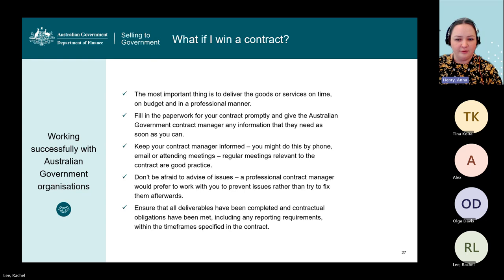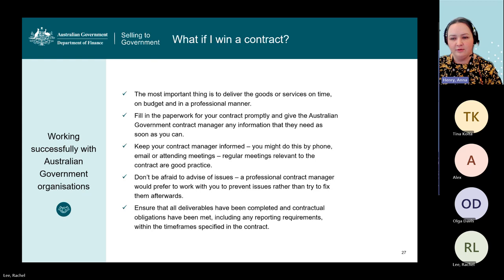To successfully work with the Australian Government, the most important thing is to deliver goods and services on time, on budget, and in a professional manner. Fill out paperwork for your contract promptly and give the contract manager any information they need as soon as you can. Keep your contract manager informed by phone, email or meetings — regular meetings relevant to the contract are seen as good practice. Don't be afraid to advise of issues; a professional contract manager would prefer to work with you to prevent issues rather than fix them afterwards. Ensure all deliverables have been completed and contractual obligations met, including reporting requirements within the timeframe specified in the contract.